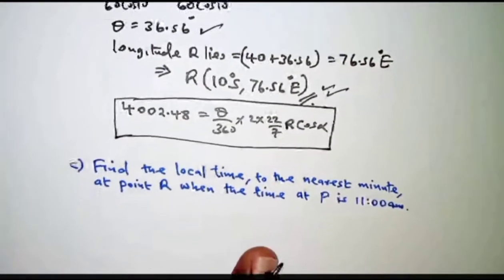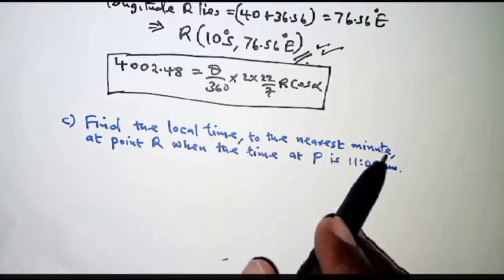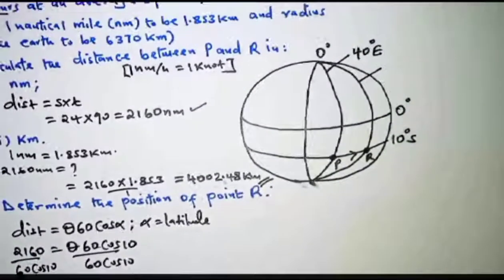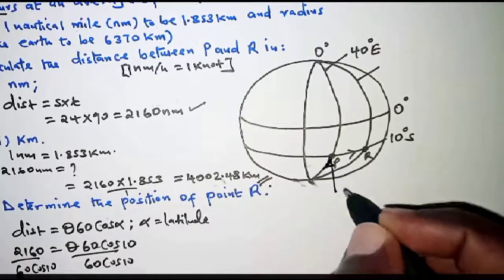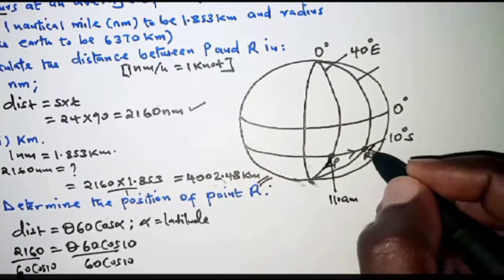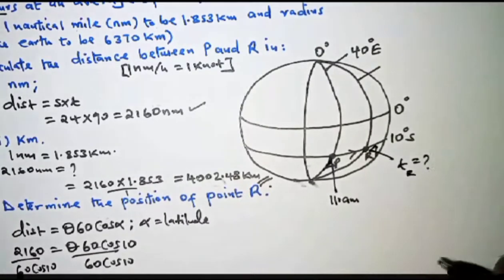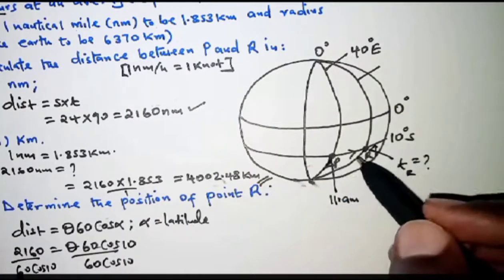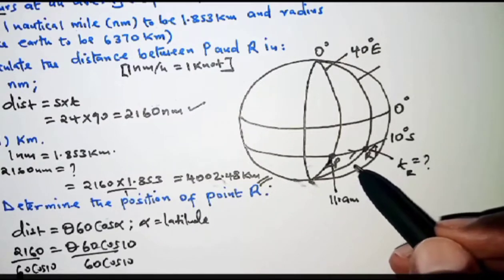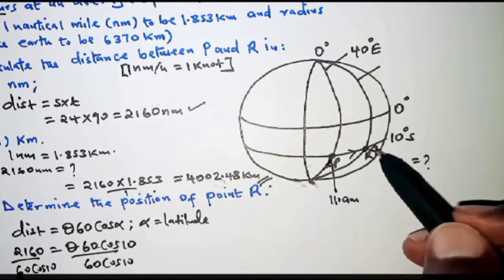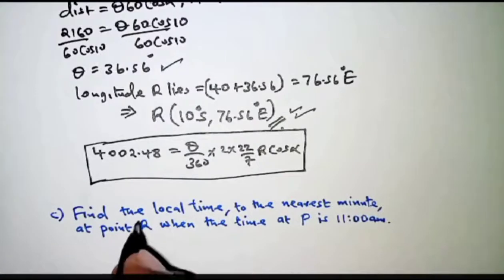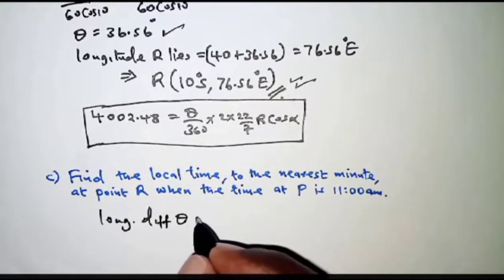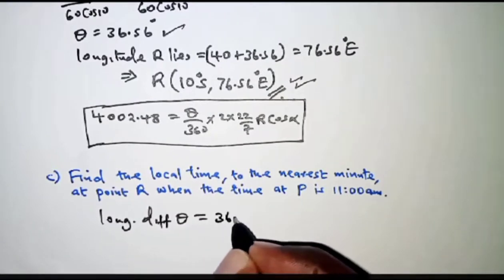For part C, we find the local time at R when the time at P is 11 a.m. The times at P and R differ due to their longitudinal difference. The longitudinal difference between P and R — which we already found — is 36.56 degrees. We know that 15 degrees is equivalent to 1 hour.